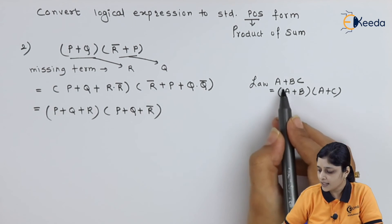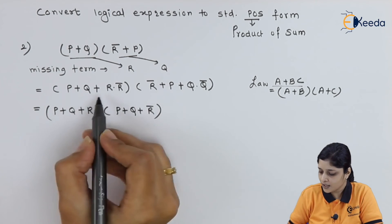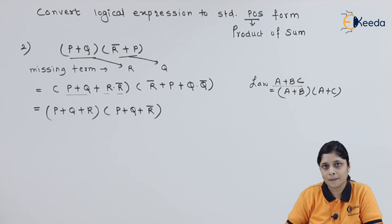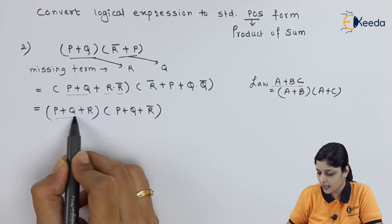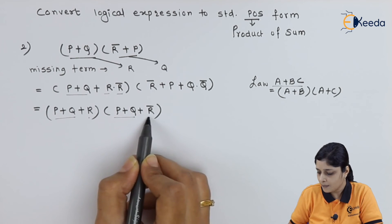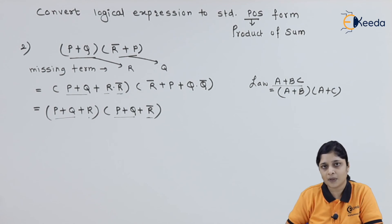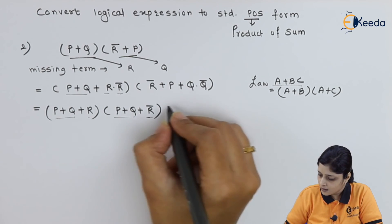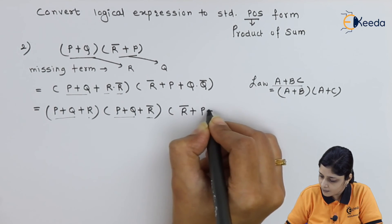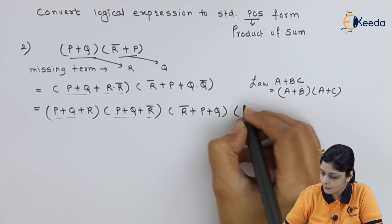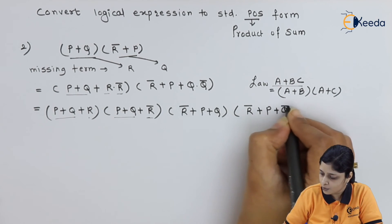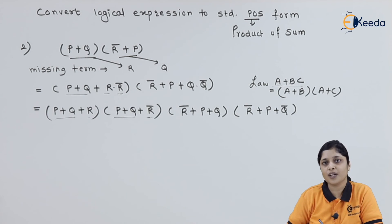Here in the second bracket, our terms are: A is R̄ plus P, B is Q, and C is Q̄. So applying the law (A plus B) · (A plus C) gives (R̄ plus P plus Q) · (R̄ plus P plus Q̄). Expanding fully: (R̄ plus P plus Q) and (R̄ plus P plus Q̄).